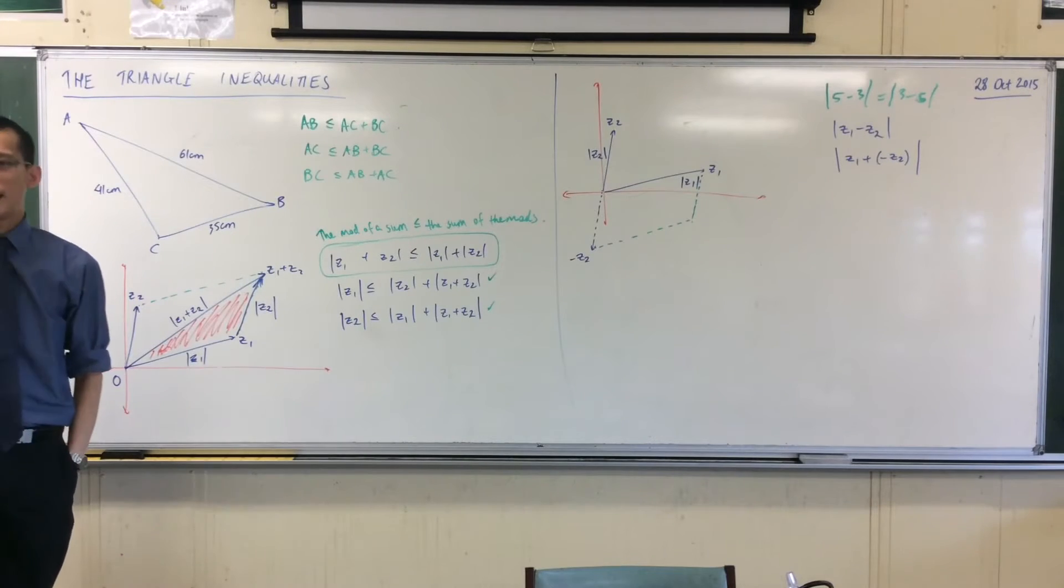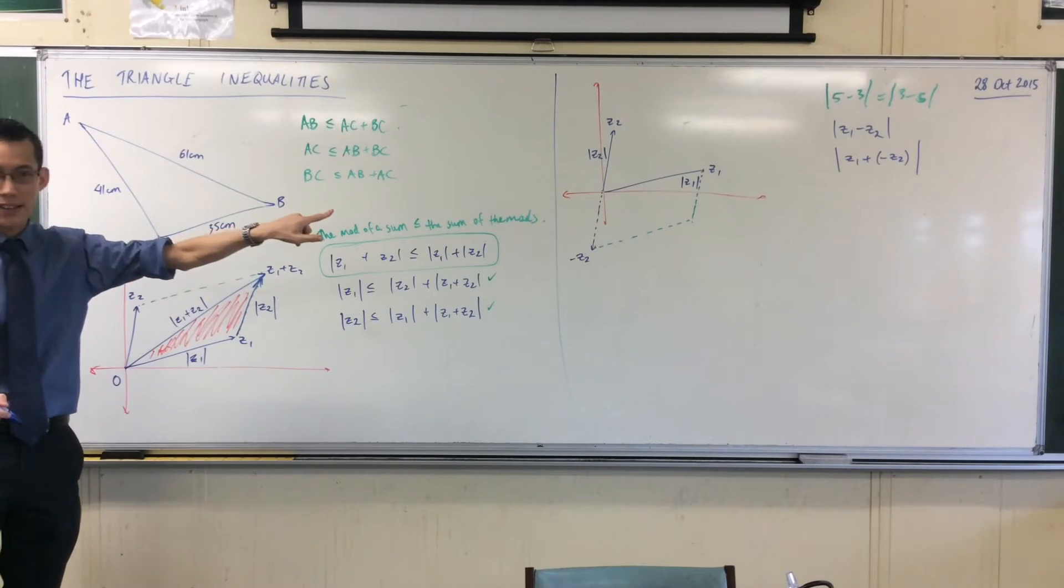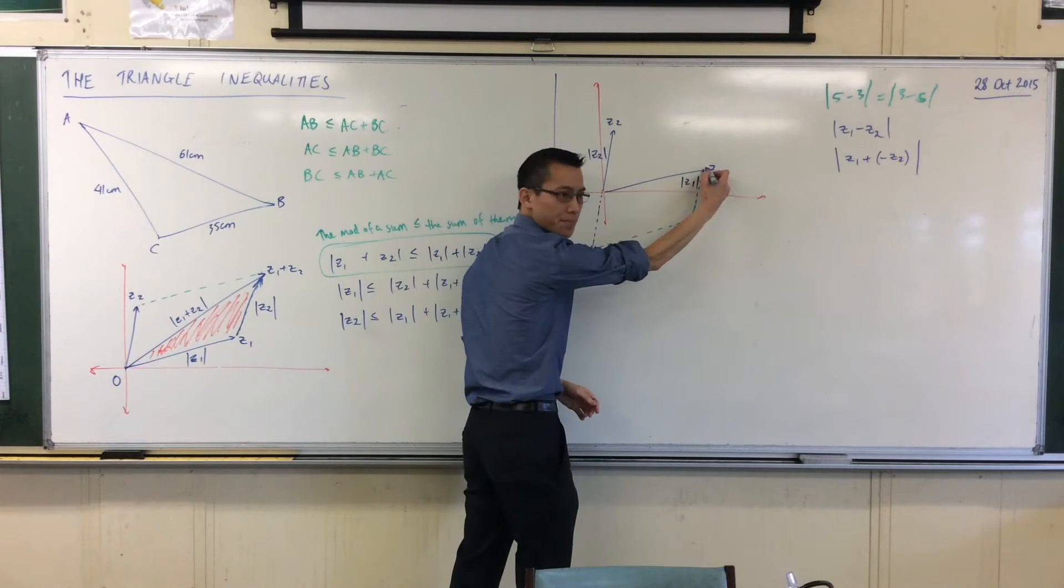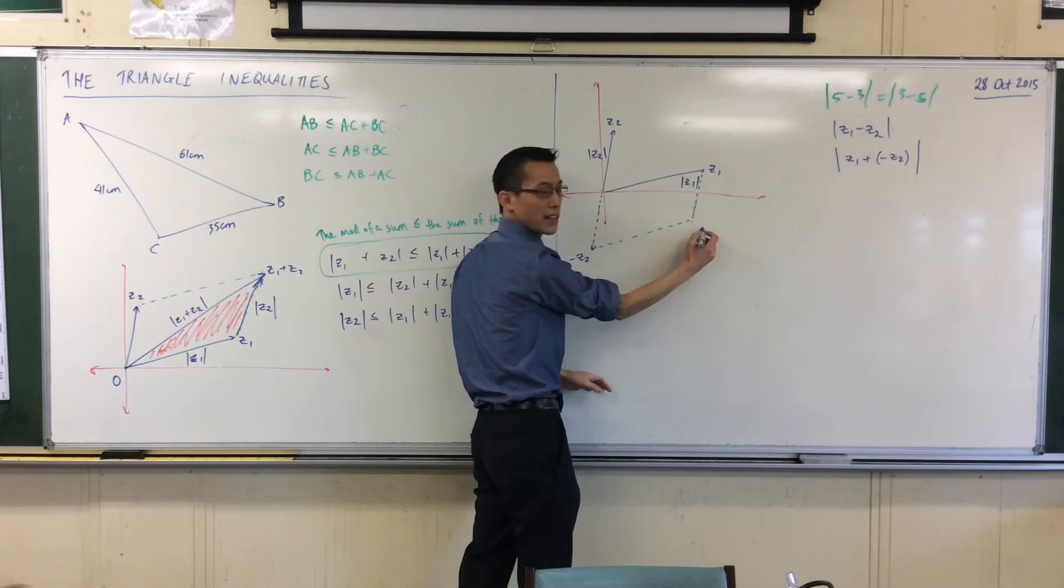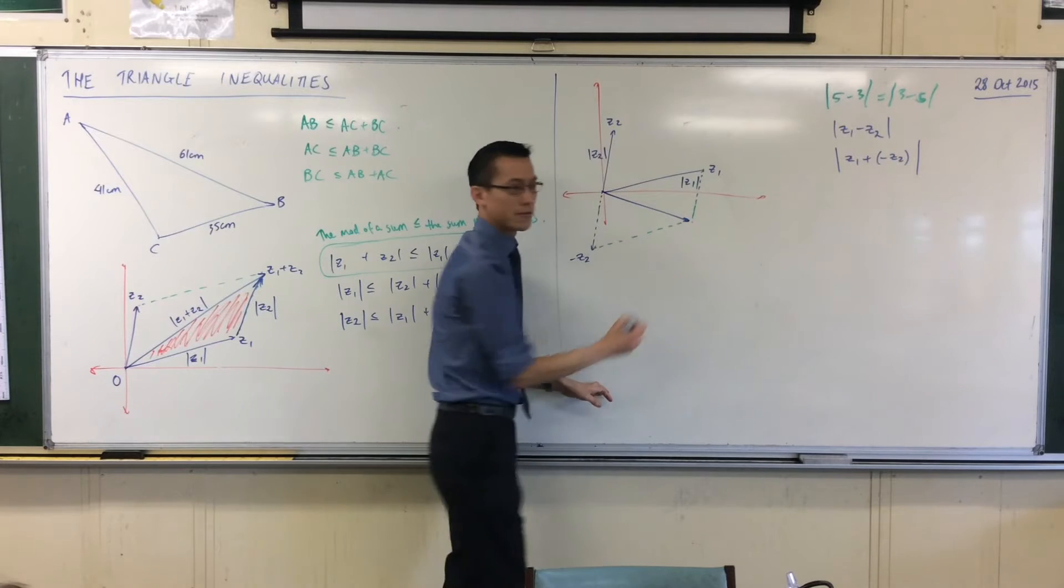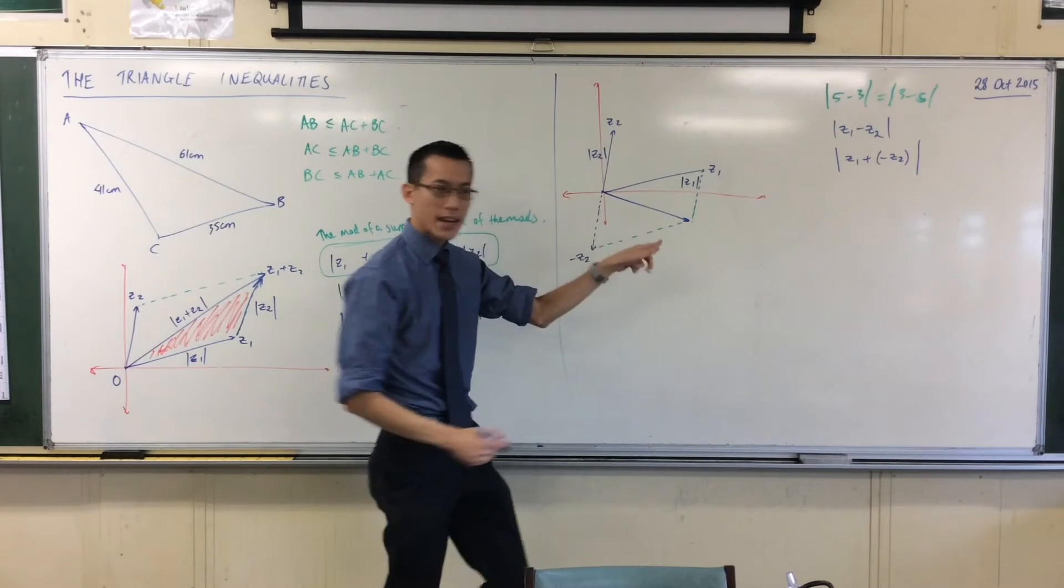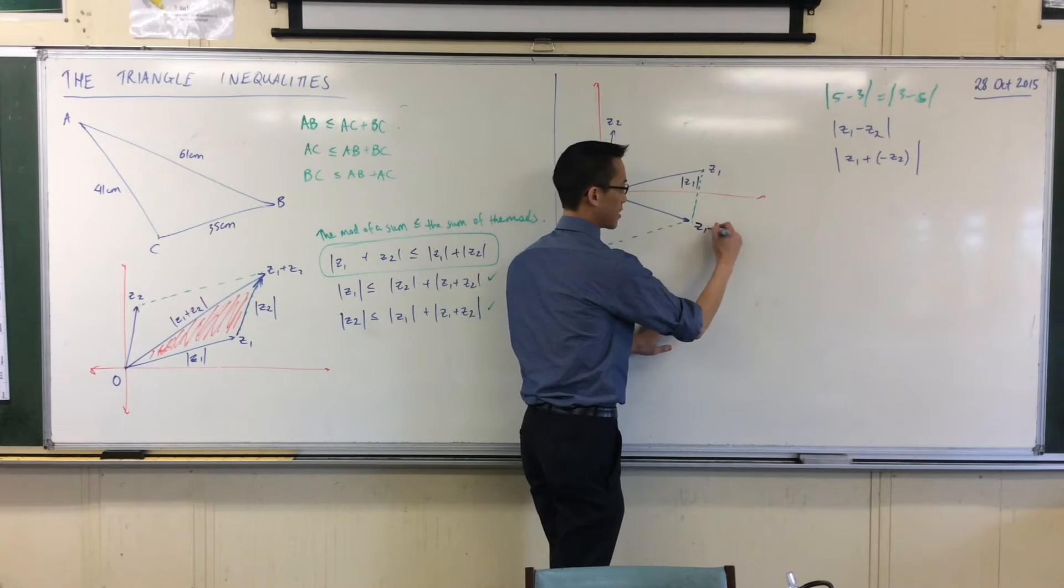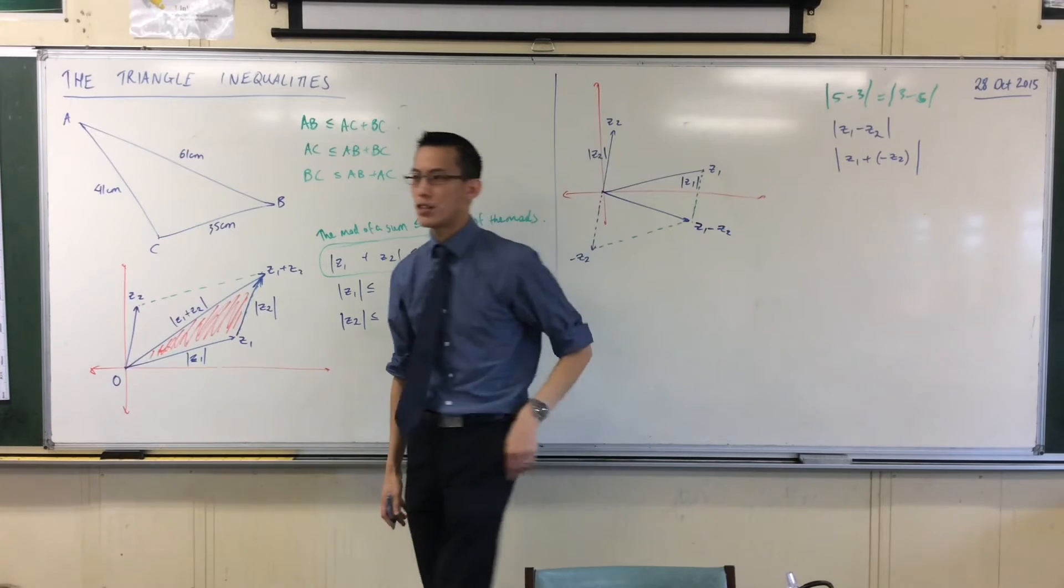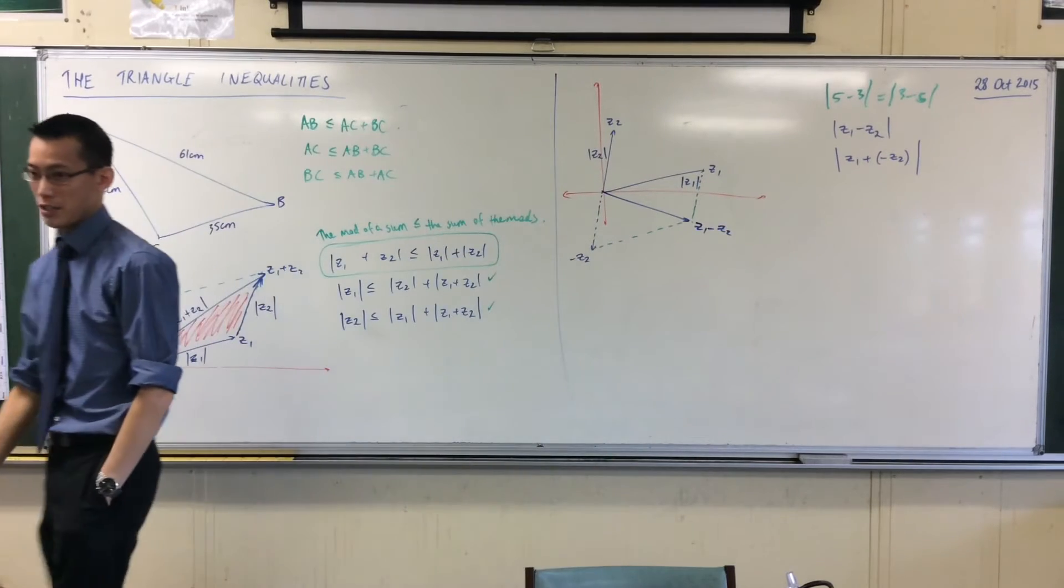Where Z1 minus Z2 should belong in this parallelogram, right? So it's going to be Z1, and then you do your negative Z2 vector, which is why you land here. This here is the position vector for Z1 minus Z2, because it's coming from the origin. Are you okay with that?